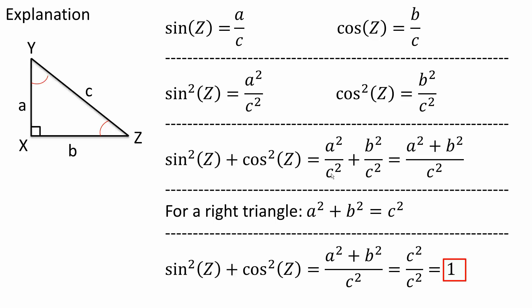Notice we have a common denominator of C squared. And we know for a right triangle, A squared — this side — plus B squared — this side — is equal to the hypotenuse squared. So A squared plus B squared is equal to C squared.